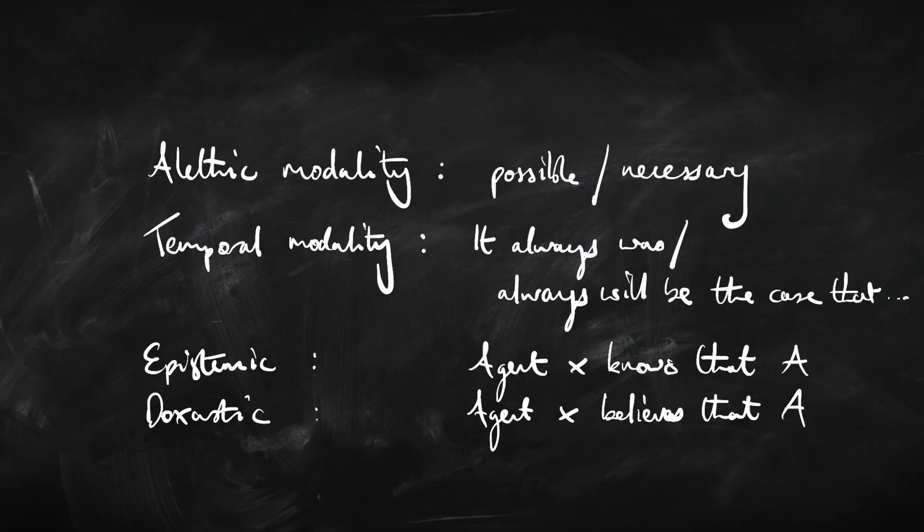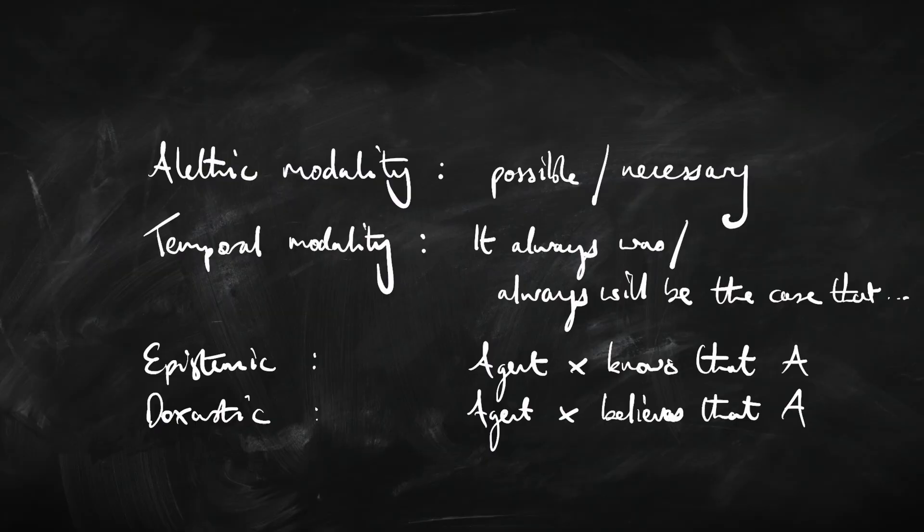Those modalities — possible and necessary — are what's called alethic modalities, to do with truth. They are ways of modifying the truth of a sentence: not just saying true or false, but possibly true or possibly false. Other kinds include temporal modality — sometime in the past it was the case that A, always in the past it was the case, or at some point in the future it will be the case. We've also got epistemic modalities, having to do with knowledge — 'I know that A.' And doxastic modality, to do with belief — 'I believe that A.'